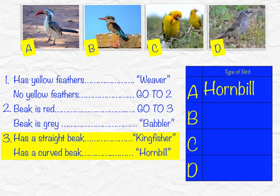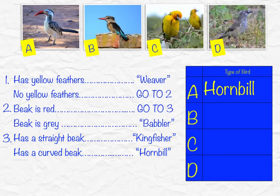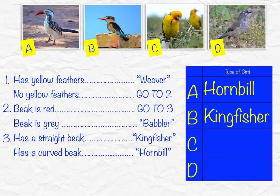We can continue like this for the rest of them. To identify B, we look at part one: it has no yellow feathers, so we go to two. Does it have a red beak? Yes it does, so we go to three. Is that beak straight? Yes, so it's a kingfisher. For C, does it have yellow feathers? Yes it does — this one's the easiest — so it's called a weaver.